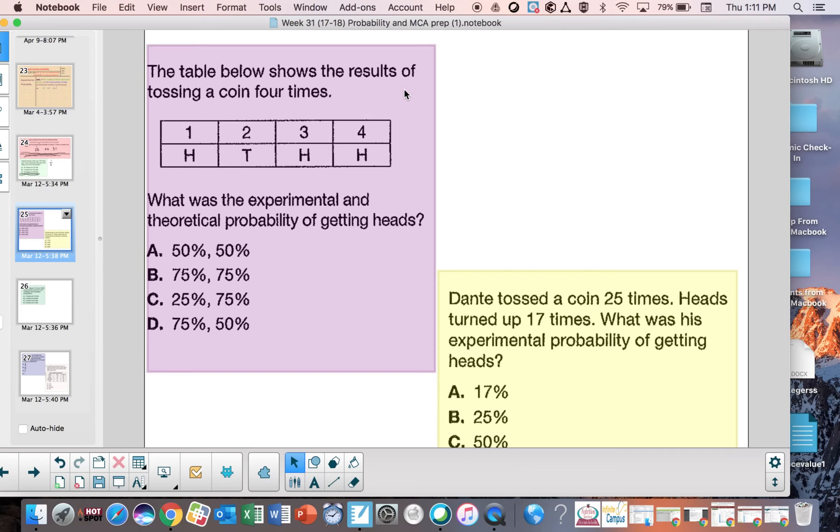The table below shows the results of tossing a coin four times. You get a head, a tail, a head, a head. This was an experiment, flip a coin four times. What was the experimental and theoretical probability of getting heads? Well, experimental is what happened. So how many times did I get heads? I got heads one, two, three times. So three out of my total amount of times that it was flipped was four. So the experimental probability is three-fourths.